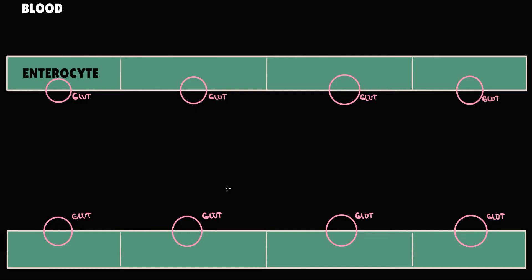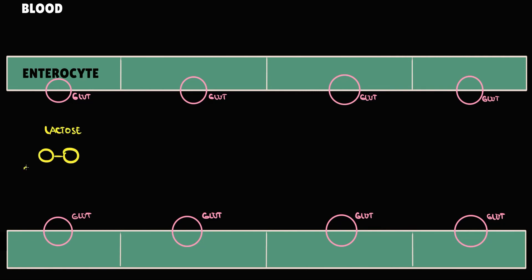In the duodenum, we have enterocytes that have GLUT transporters, and we also have a blood compartment. Let's suppose we intake some portion of lactose. Lactose is a disaccharide that consists of glucose and galactose. The problem with all disaccharides is that we cannot absorb them, because enterocytes do not have a transporter for them.